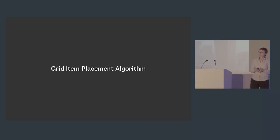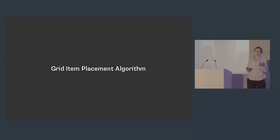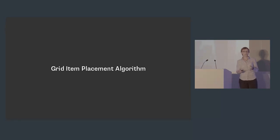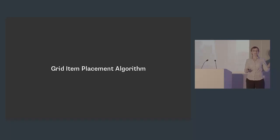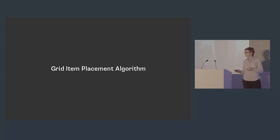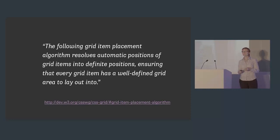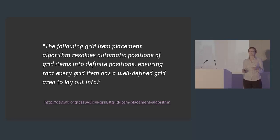Very early on I showed an example where text got jammed into a gutter column because grid was trying to auto-place that content and didn't know that was a gutter column. Most of the time when building a layout you want to position things explicitly. But sometimes it's nice to create a grid, throw a chunk of content at it, and have it lay out nicely. I'm going to show an example of where that's useful and how the grid item placement algorithm works — it also helps you understand what grid is doing with unpositioned content, saving you from baffling situations.